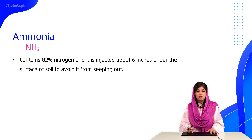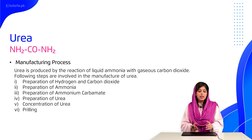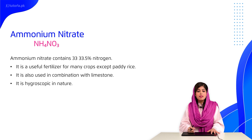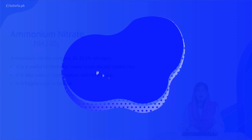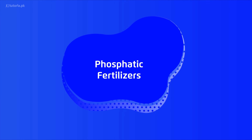The manufacturing process of urea involves: first, preparing ammonium carbamate, then dehydrating ammonium carbamate to generate urea, and then passing it through a concentration and prilling process to finally produce urea. Moving forward, ammonium nitrate contains about 33.5% nitrogen and is a useful fertilizer for all crops except paddy rice fields. It can also be used in combination with limestone. Students should note it is hygroscopic in nature, meaning it absorbs moisture.